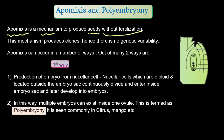Until now, what we have understood is that seeds are produced after fertilization — after fusion of male and female gametes, after development of embryo — basically after fertilization only.